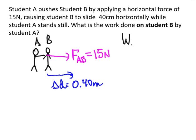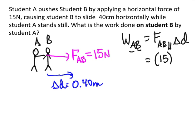That would be the work done of A on B — the work done on student B by student A. So that's going to be the parallel component of the force of student A on B times the displacement of student B. The force is completely horizontal and delta D is completely horizontal, so those are in the same direction. That means positive work, and all of F_AB is the parallel component. So I get to put in the entire 15 newtons, multiply by 0.4, and 15 times 0.4 is 6. So student A is adding 6 joules of energy to student B when he gives him a push.